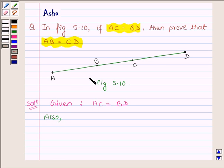Also, from the figure we find that AC can be written as AB plus BC, since point B lies between A and C.